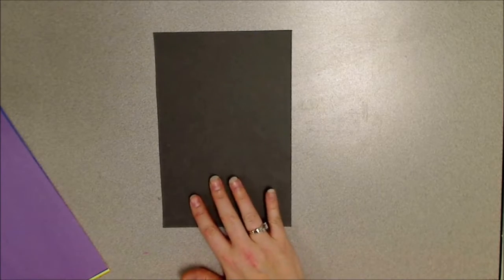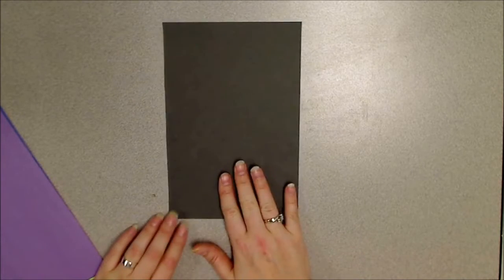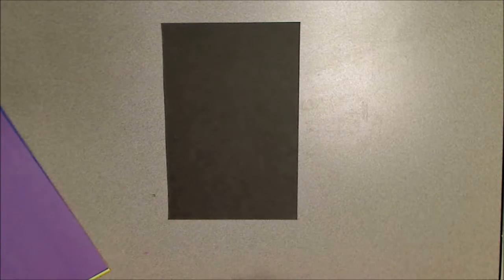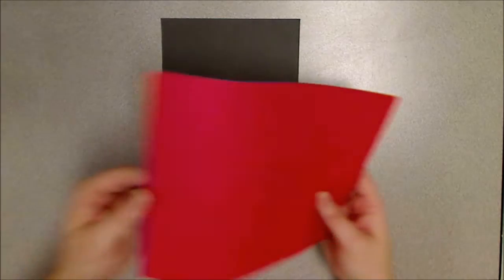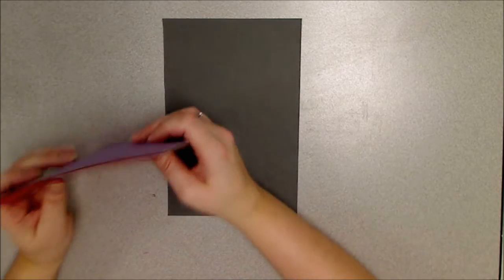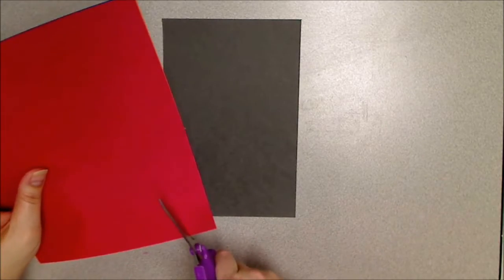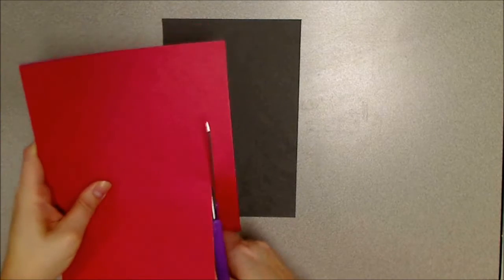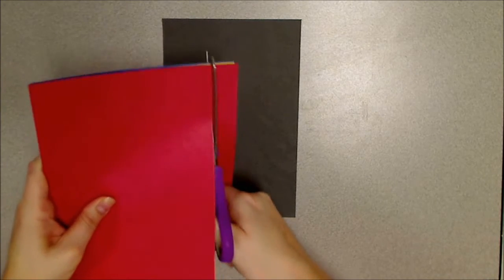If you want to make this more into a vase-like shape you can, if you want to keep it rectangle you can, it's completely up to you. So I've got random colors of paper here, I actually have rainbow order. I love me some rainbow. You're just gonna cut squares or rectangles.